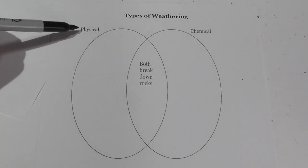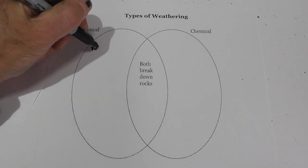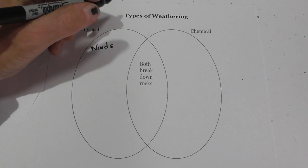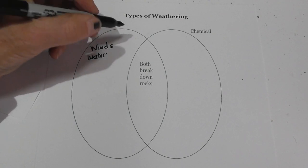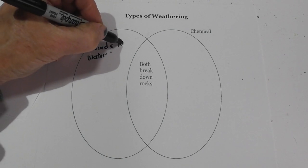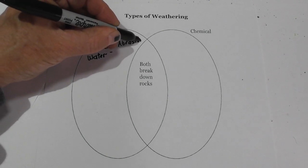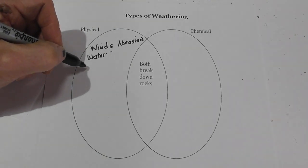Physical weathering is a physical change, which is a change in appearance only. A couple of factors or agents are responsible — you have wind and water. These can lead to what is called abrasion. Think of abrasion as when you're riding your bike, you wreck, and some of your skin is rubbed off. That's abrasion.